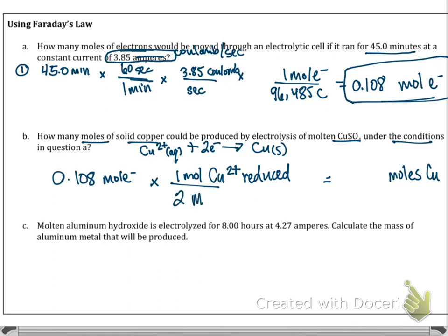I need two moles of electrons based on my half reaction shown above. And then I know that for every one mole of Cu2+, that gets reduced, I'm going to form one mole of Cu solid. So doing this math will help me come to my answer of 0.0540 moles of copper.